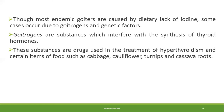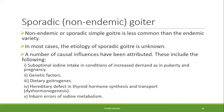Though most endemic goiters are caused by dietary lack of iodine, some cases occur due to goitrogens and genetic factors. Goitrogens are agents that have the capability to cause goiter — they interfere with the synthesis of thyroid hormones. These substances can be drugs used in the treatment of hyperthyroidism, or certain food items such as cabbage, cauliflower, turnips, and cassava roots.